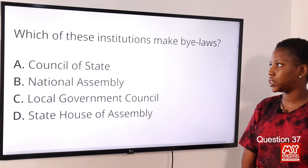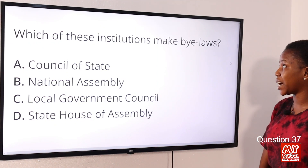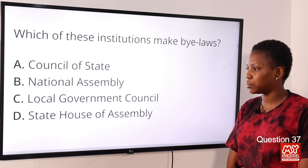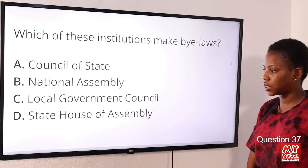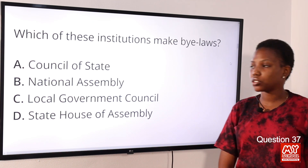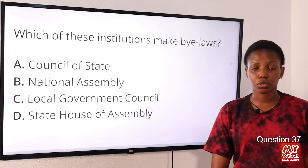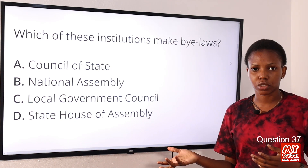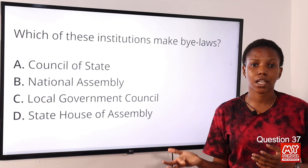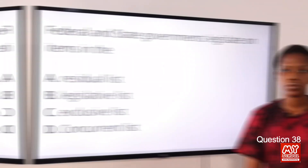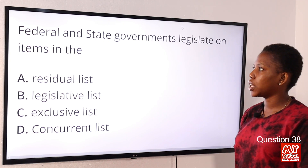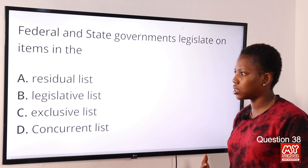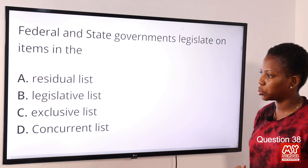Question 37: Which of these institutions makes bylaws? Option A: Council of States. Option B: National Assembly. Option C: local government council. Option D: state house of assembly. The answer is Option C, local government council. Bylaws are laws made by local governments, local authorities, or public corporations.